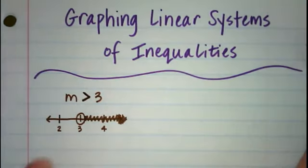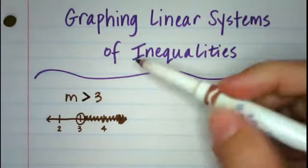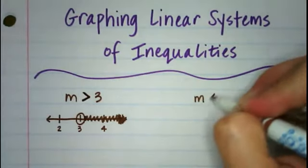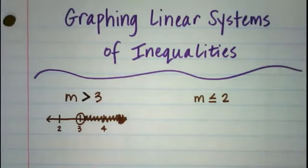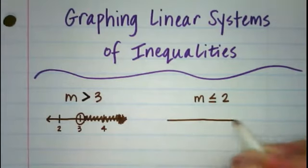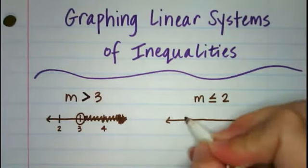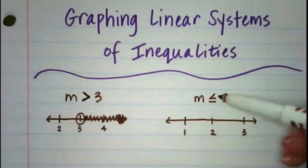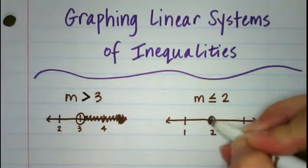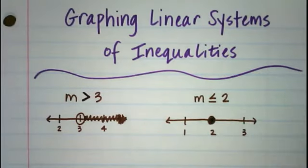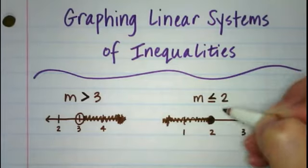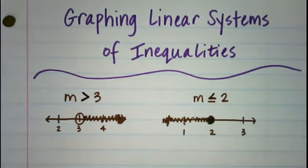You would shade the rest of the number line, including the arrow, to show that M could be any number as long as it was bigger than 3. A similar example going the opposite direction: if we graph M is less than or equal to 2, our M starts at 2, but it can be less than or equal to 2 — so we use a solid point and shade to the left to show the numbers less than 2. That's a quick review of Math 6 or Math 7.